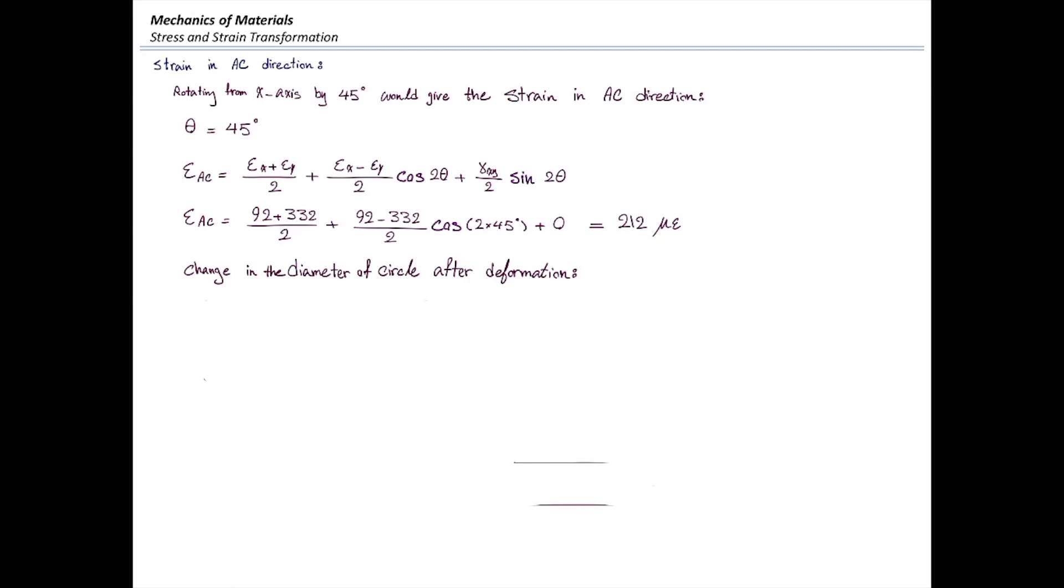Knowing strain, we can determine how much is the change in the diameter of that circle, which is strain multiplied by the initial diameter. Initial diameter was 250. Multiply that by strain would give us 0.053 millimeter.